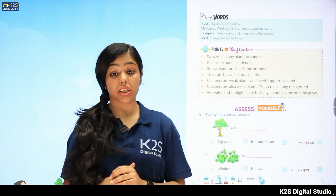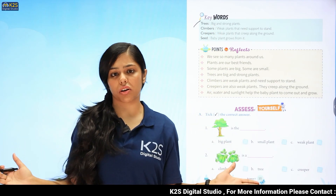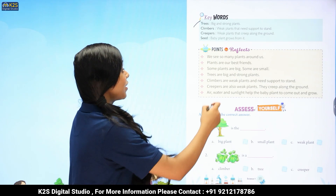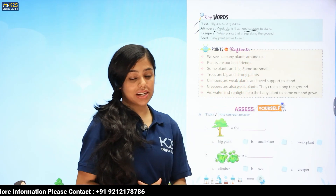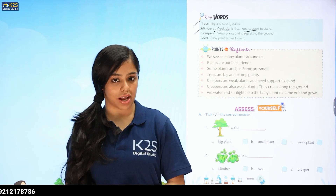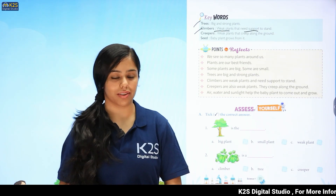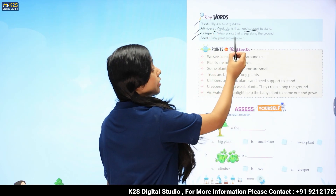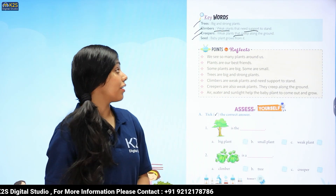So, here we have our difficult words. What are trees? Trees are big and strong plants. Climbers are weak plants that need support to stand. Climbers hote hai, woh weak hote hai, aur unko kisi doosre plant ki zaroorat hoti hai. Next are creepers. Weak plants that creep along the ground. Jo creep karte hai hamare ground mein. Right?